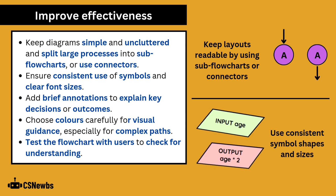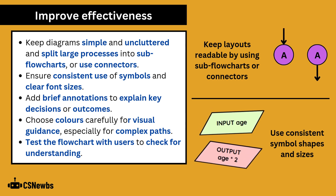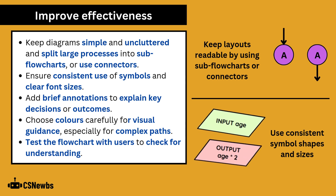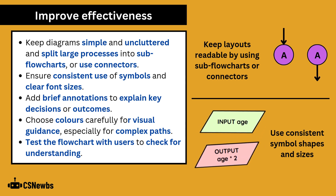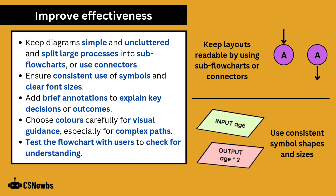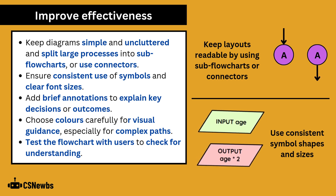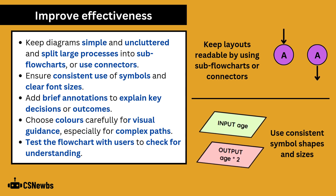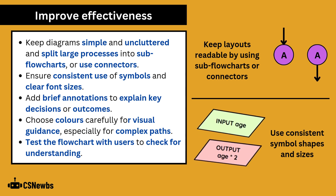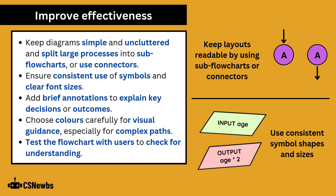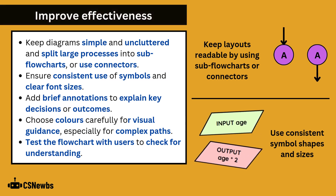To improve the effectiveness of a flowchart, keep diagrams simple and uncluttered, and split large processes into sub-flowcharts or use connectors across pages. Ensure consistent use of symbols and clear font sizes. Add brief annotations to explain key decisions or outcomes. Choose colors carefully for visual guidance, especially for complex paths. And test the flowchart with users to check for understanding.